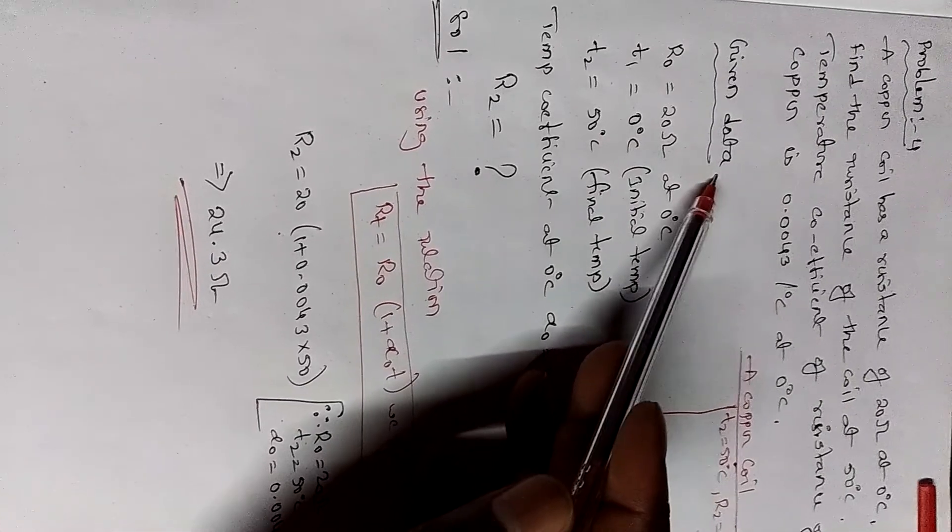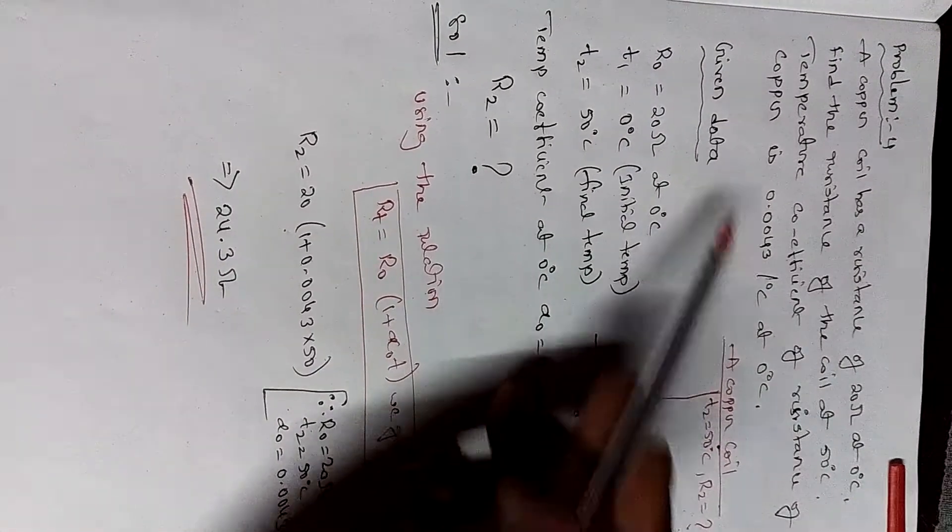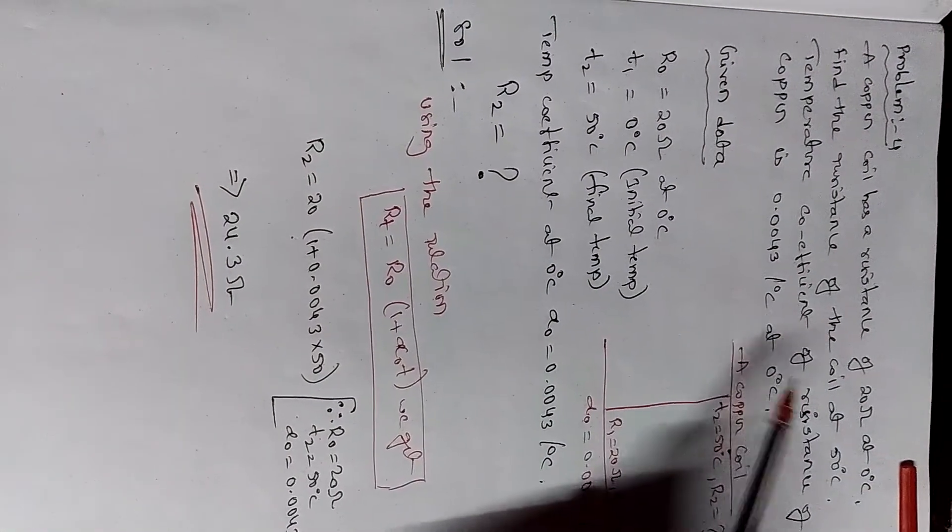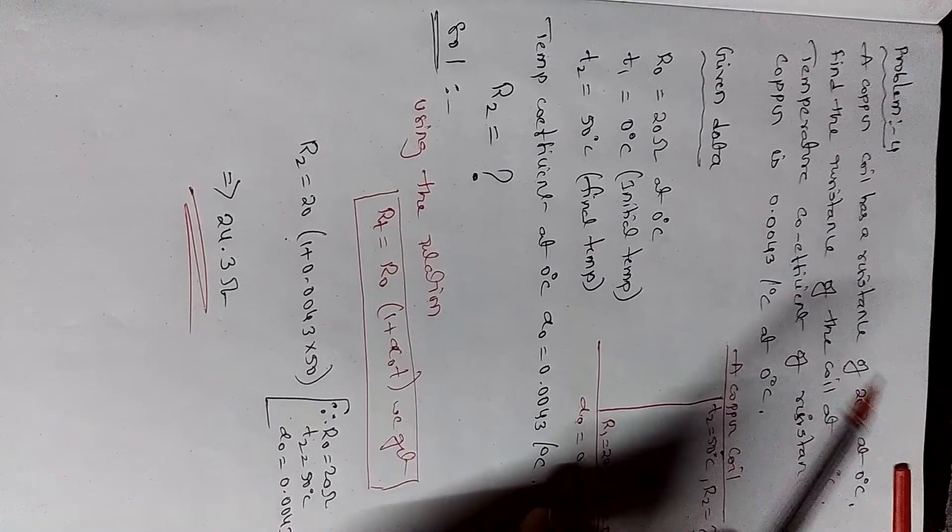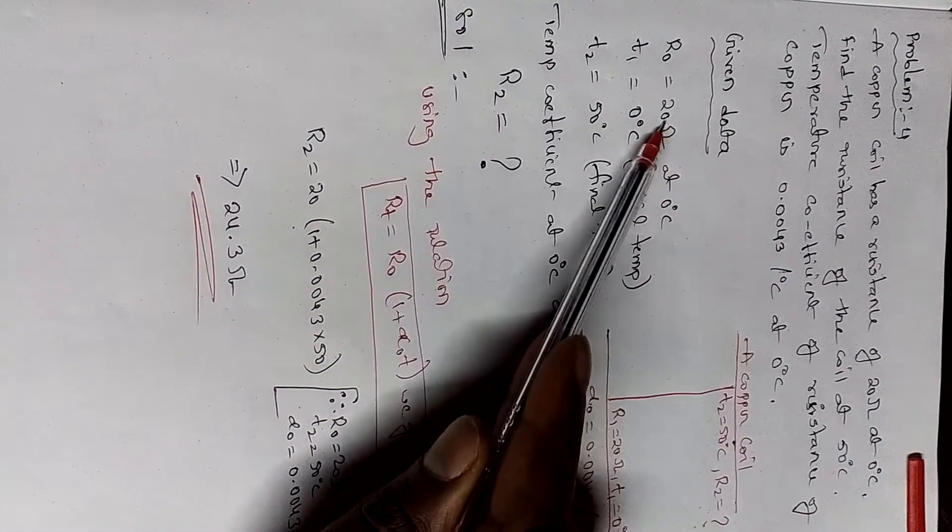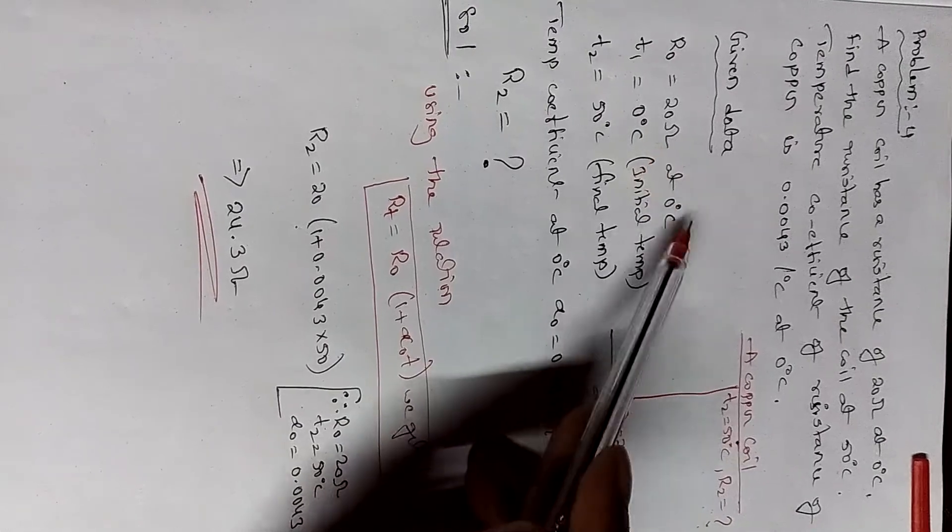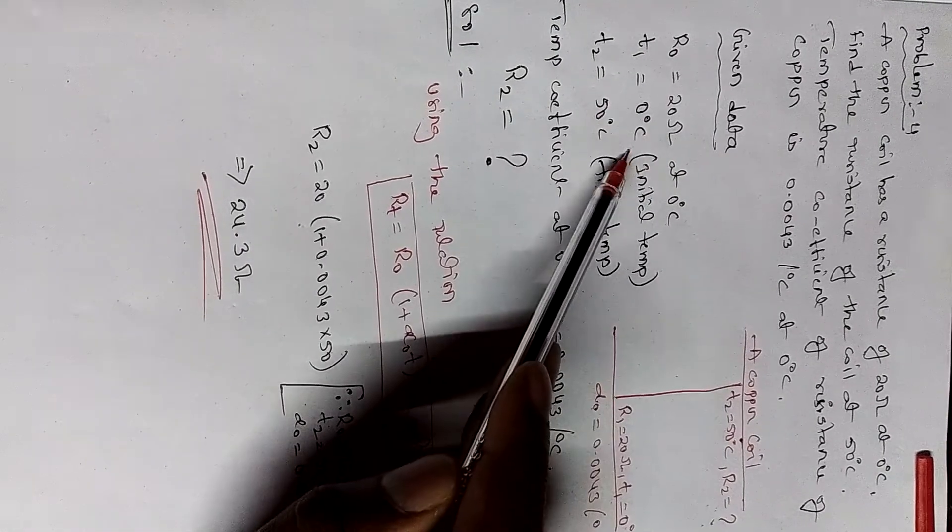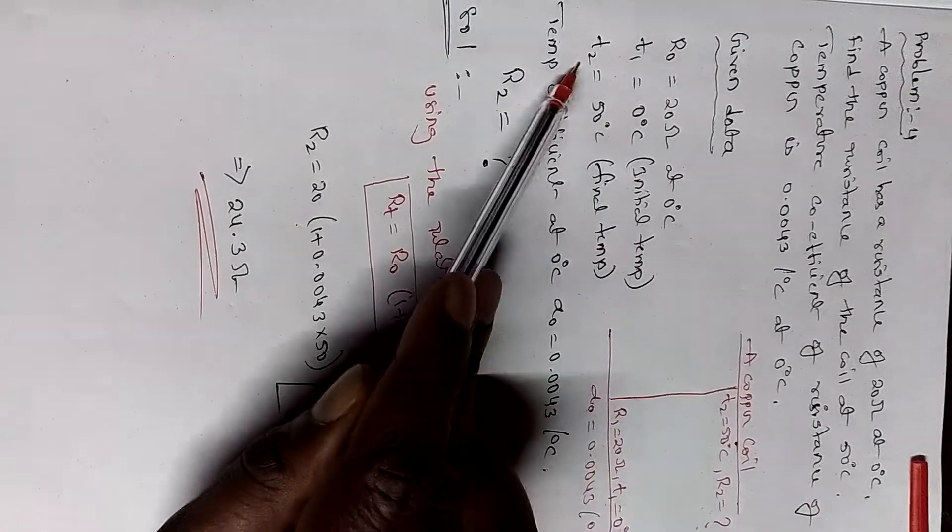This is the given data. First of all, after understanding this problem, you have to write the given data: R naught equal to 20 ohms at zero degrees, T1 equal to zero degrees initial temperature.